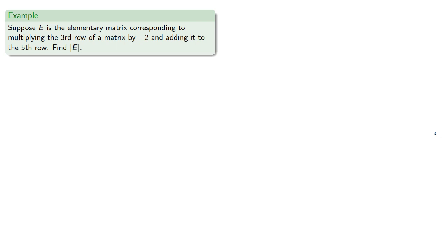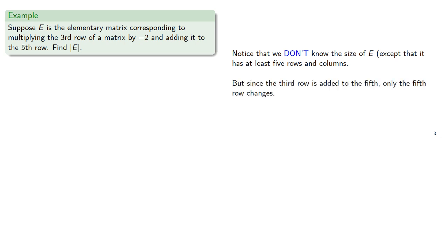Notice that we don't know the size of E, except that it has at least five rows and columns. But since the third row is added to the fifth, only the fifth row changes, so we know the first four rows.